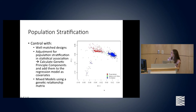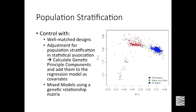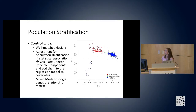A principal component plot aggregates genetic information across the genome. Here PC1 versus PC2 shows that you can separate Italians from non-Italians within a purely European ancestry study, demonstrating substructure even within European populations. Population stratification can be adjusted for through well-matched study designs, by adding genetic principal components as covariates in association models, or using mixed models with a genetic relationship matrix.